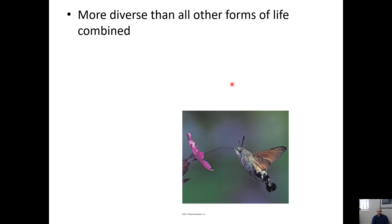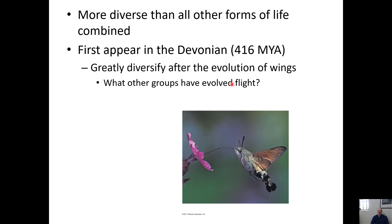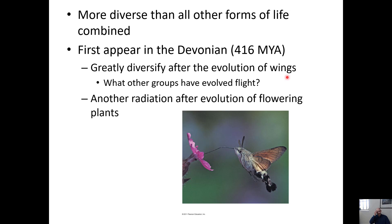Insects are more diverse than all other forms of eukaryotic life combined. The phylum Arthropoda appears in the Cambrian explosion, but insects specifically appear in the Devonian — a bit later in the Paleozoic. Wings then evolve and insects really explode in diversity, allowing them to take advantage of new habitats. There's even a moth that looks like a hummingbird, illustrating just how diverse this group became after evolving wings.